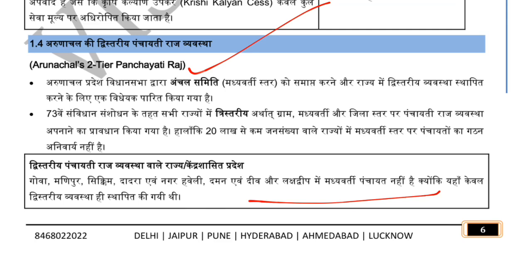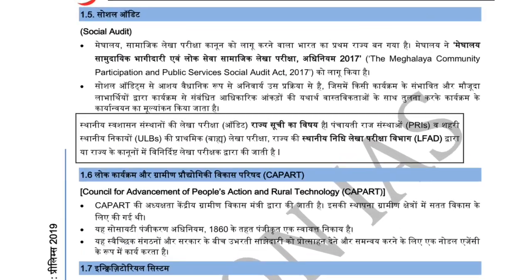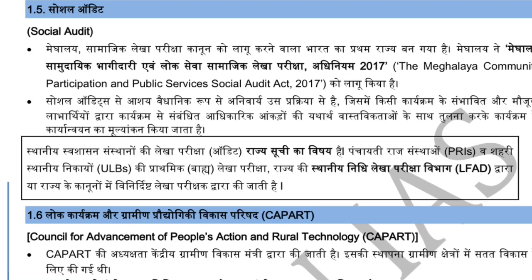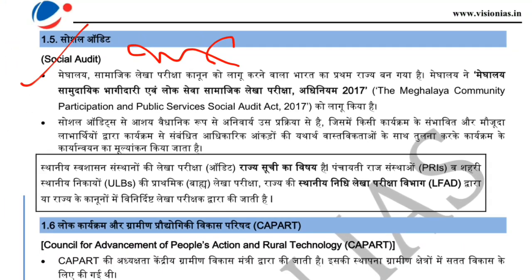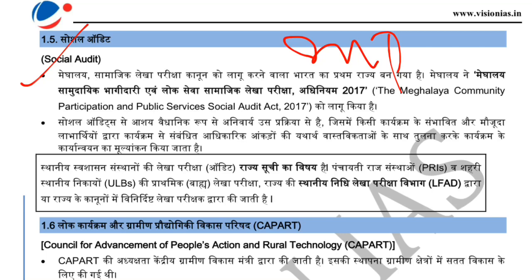Let's talk about social audit. What is social audit and what is most important about it from an exam point of view? Meghalaya made social audit — Meghalaya became the first state to implement social audit. This is very important from our exam point of view. Meghalaya is the first state; the second one also became a social audit state.